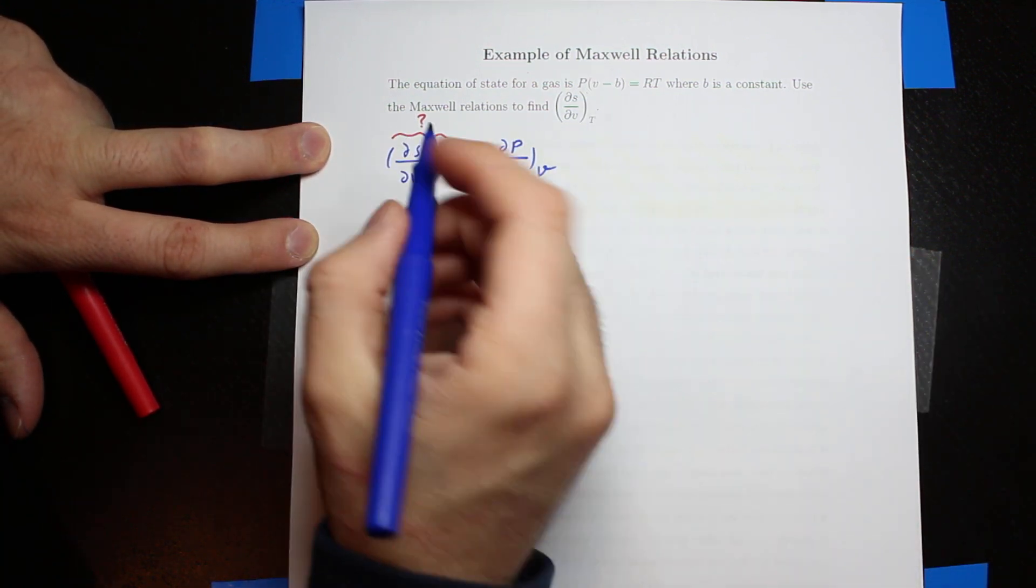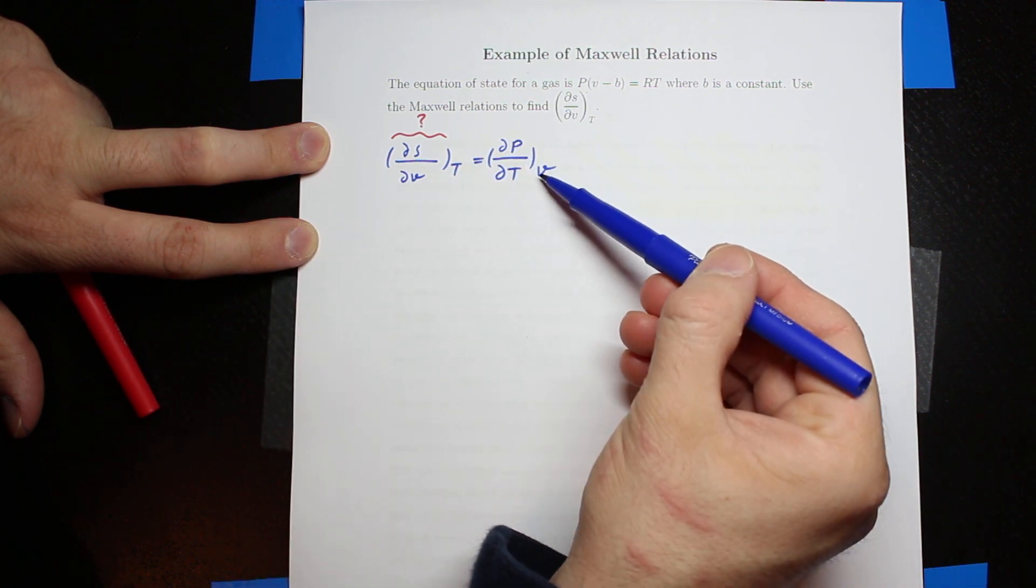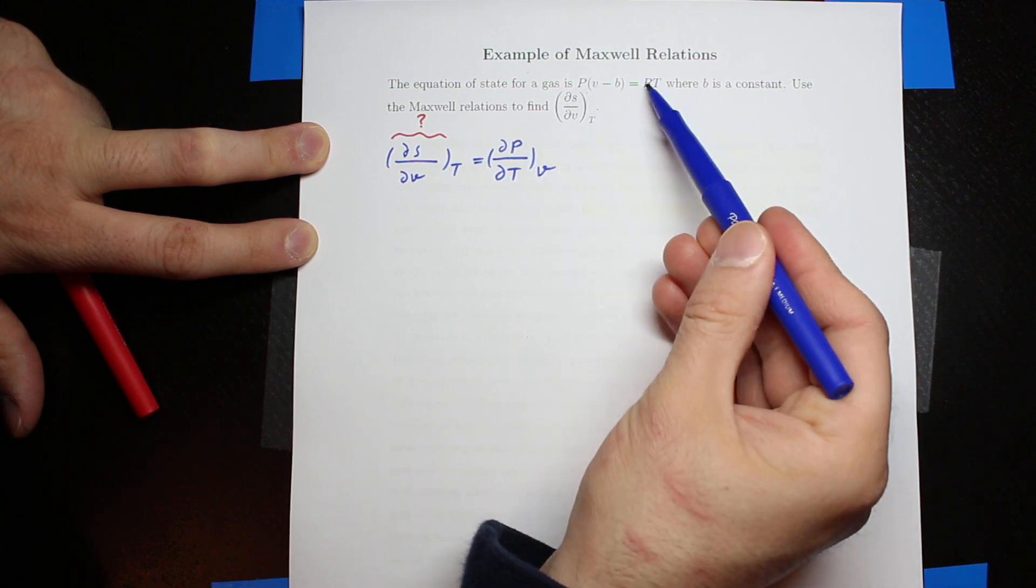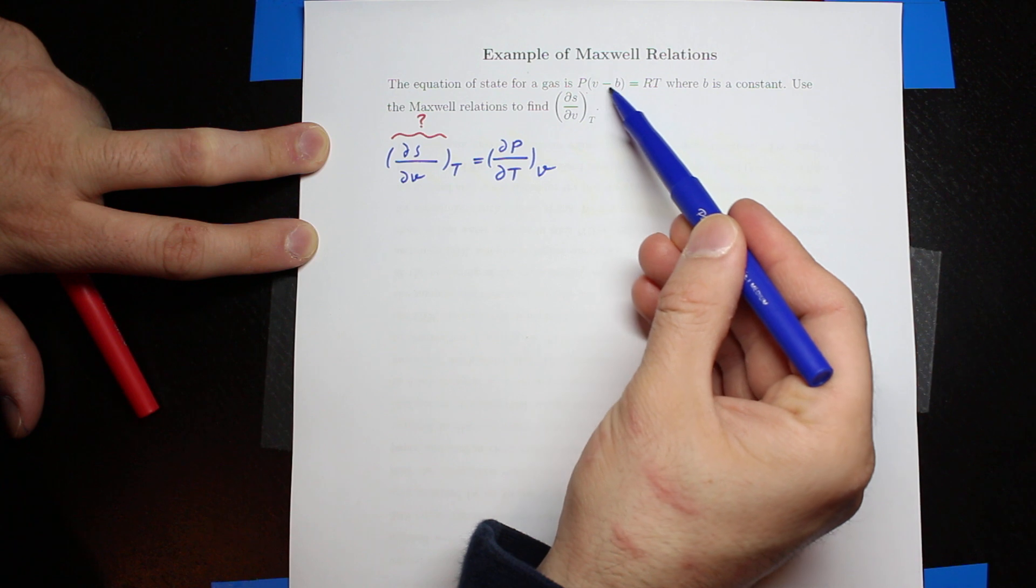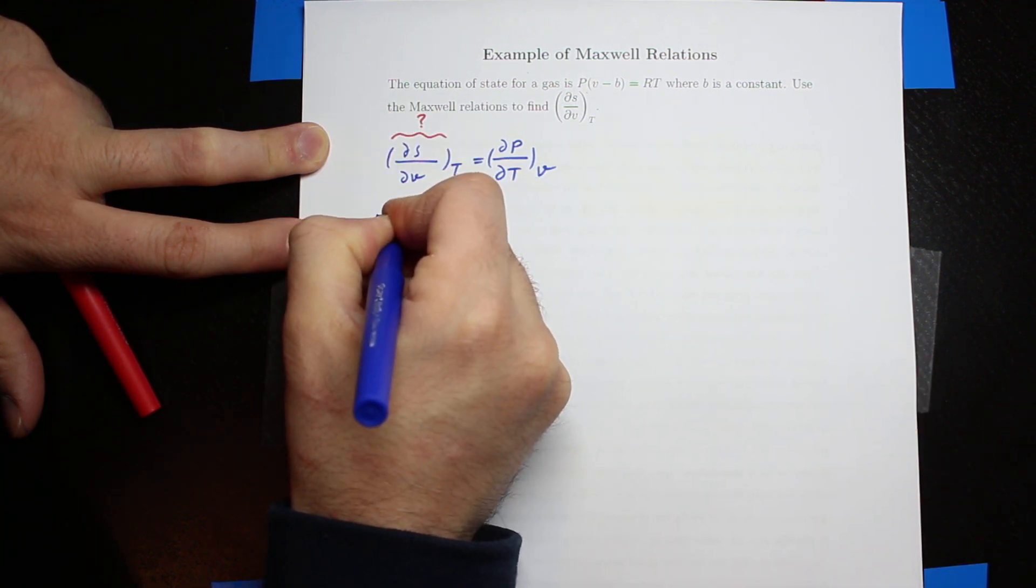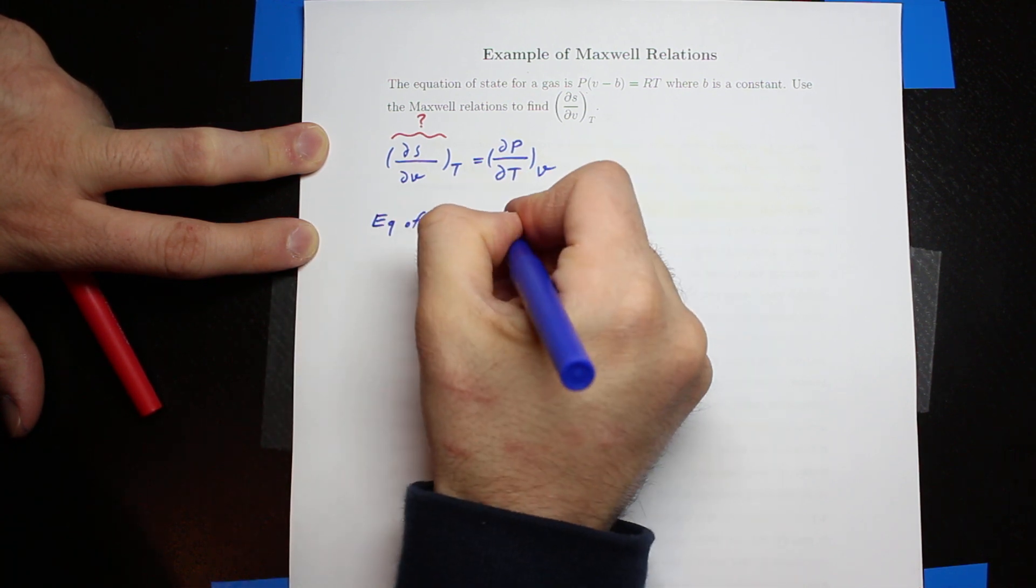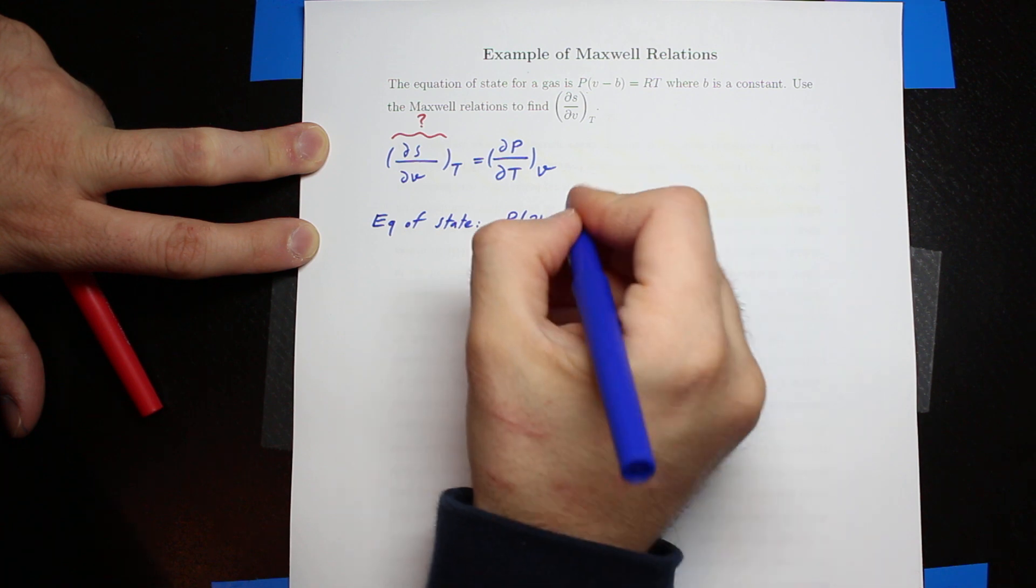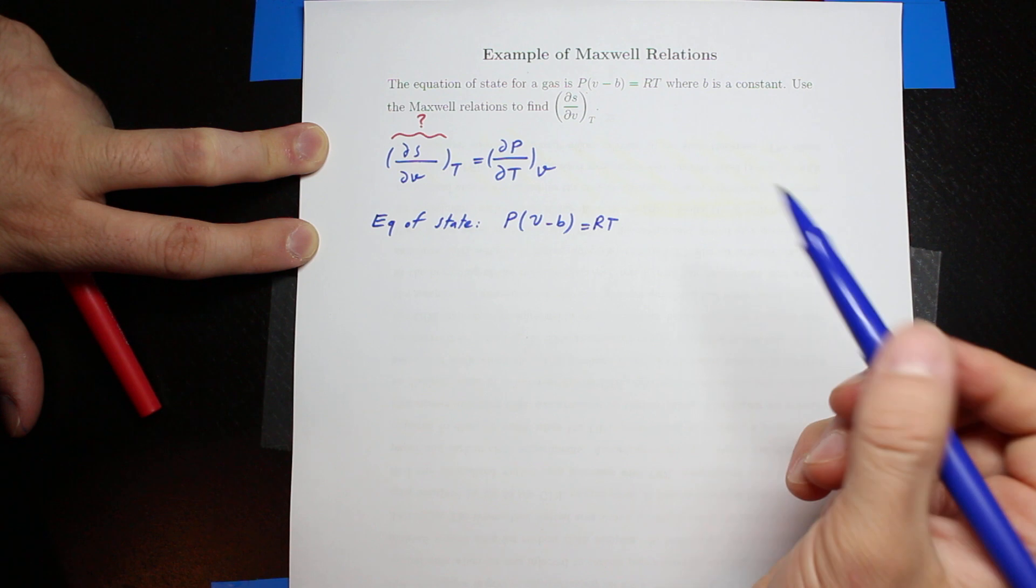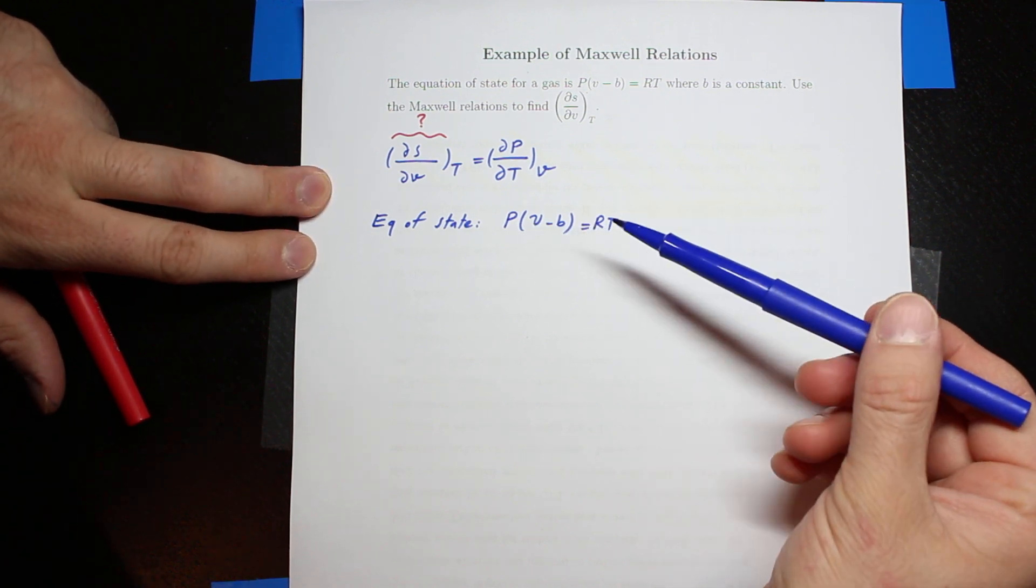The right-hand side says ∂P/∂T when the volume is constant. In order to develop this equation, I'm rewriting these and basically solving this equation of state for pressure. The equation of state says pressure multiplied by specific volume minus B, which is a constant, equals RT. It's pretty much similar to PV = RT that we had for ideal gas law.